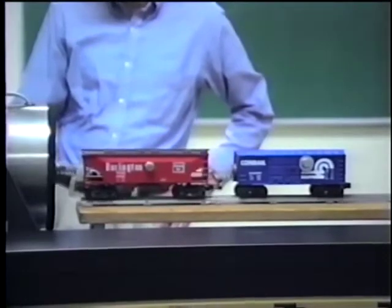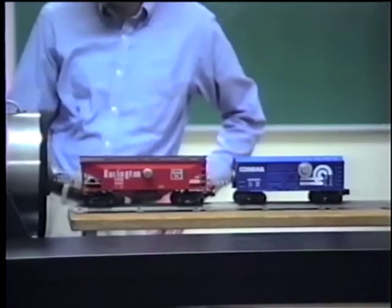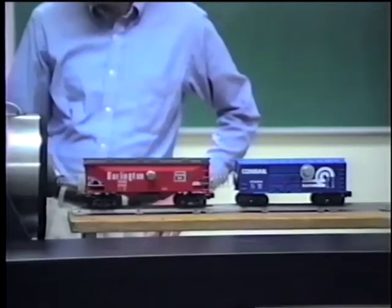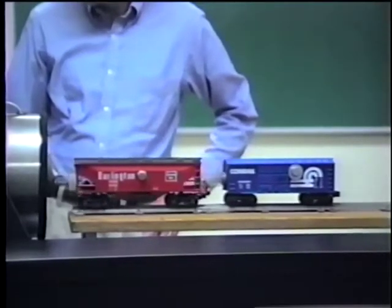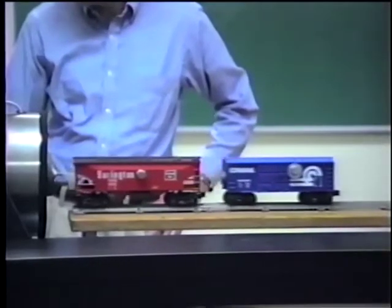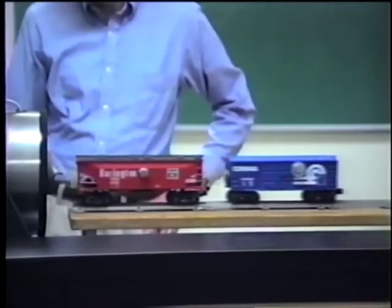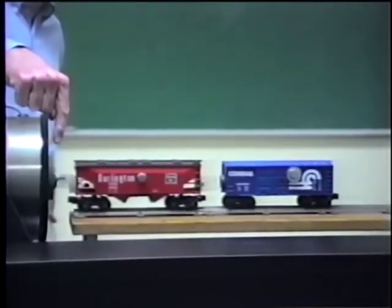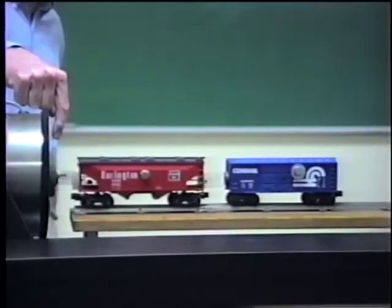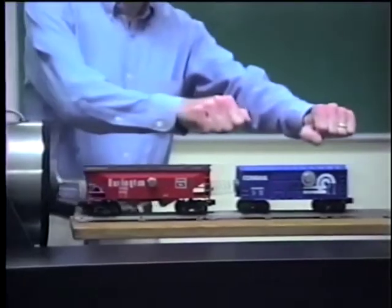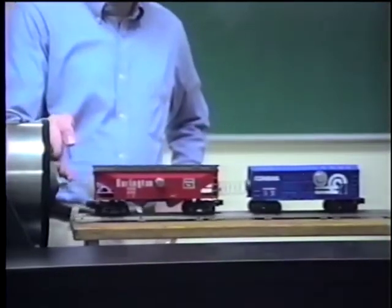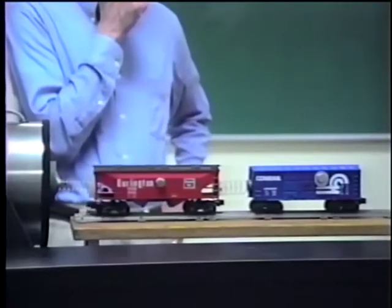Now we're going to increase the frequency a bit, up to 0.9, 1 — I have to cut back on the amplitude of the excitation a bit — and let's see what starts to happen. We're up to 1.3, 1.4, 1.5. Now we need to cut back on the amplitude of the excitation or we might get a derailment. You can see the shaker is moving back and forth with a fairly small amplitude, maybe a quarter of an inch, but the cars are moving with a much greater amplitude. They're also moving in phase, with an amplitude much greater than the driver's. So this is a resonance — the first resonant frequency.